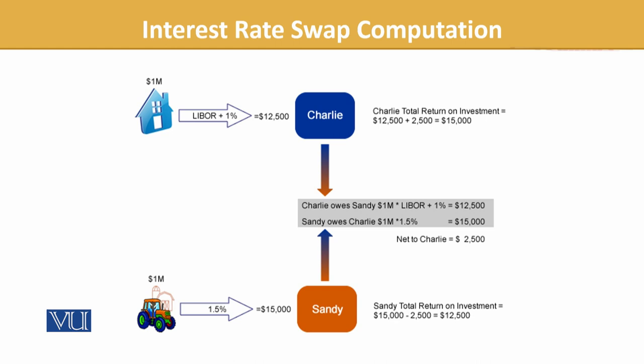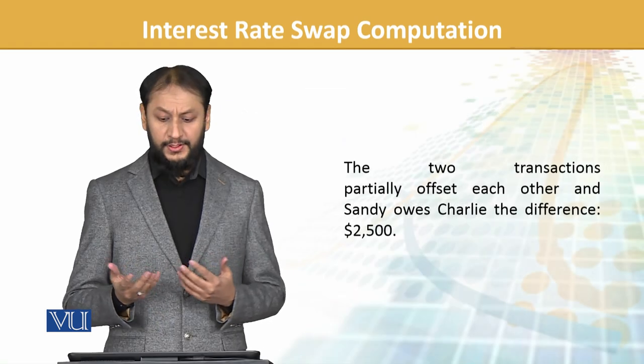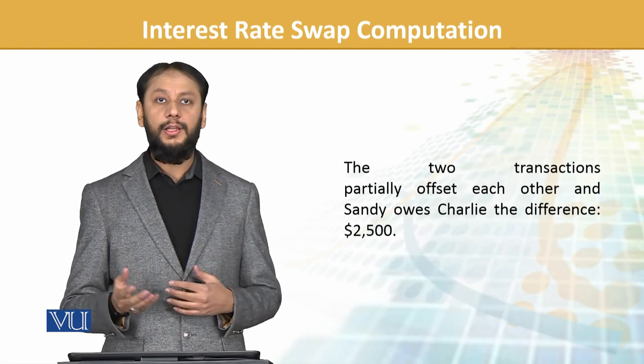So Sandy will be giving 12,500 to Charlie and Sandy will also be giving 15,000 to Charlie, netting against the 12,500 Charlie owes. The two transactions partially offset each other, and Sandy owes Charlie the difference, which is the net settlement amount between the two parties.